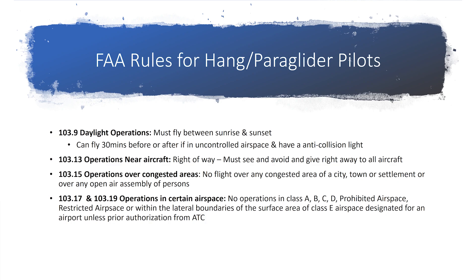The next one is operations in certain airspace. We're not allowed to fly in class A, B, C, or D airspaces. We're also not allowed to fly in prohibited airspace or restricted airspace, or within the lateral boundaries of the surface area of class E airspace designated for an airport, unless we get prior authorization from ATC.